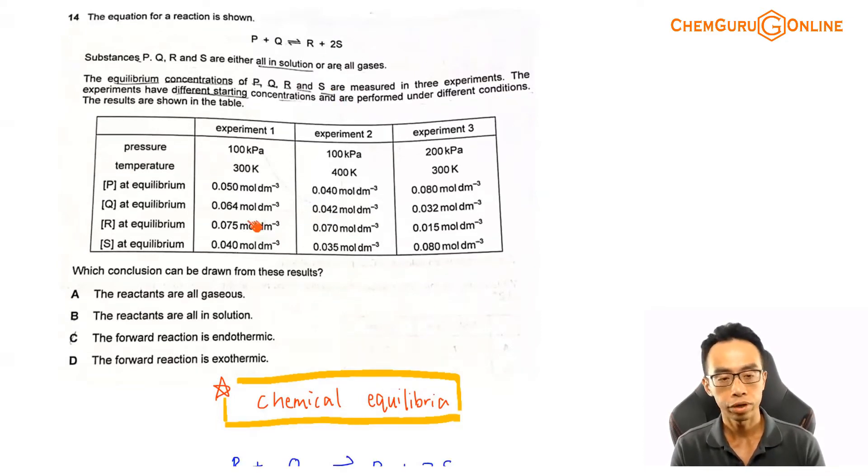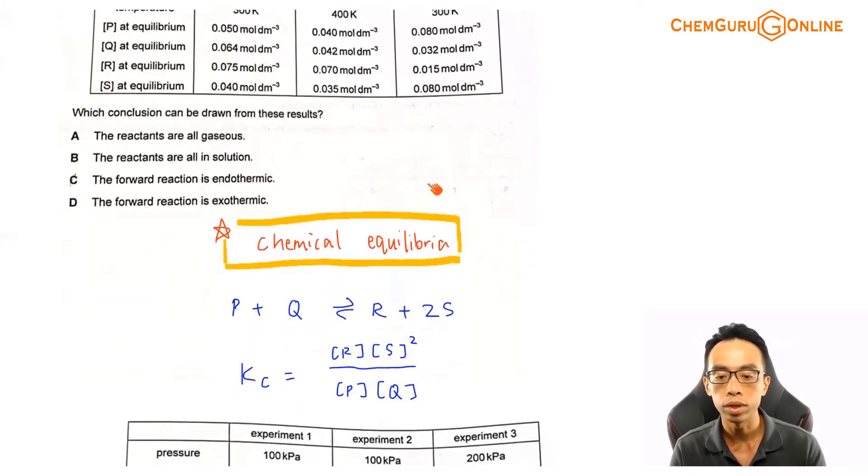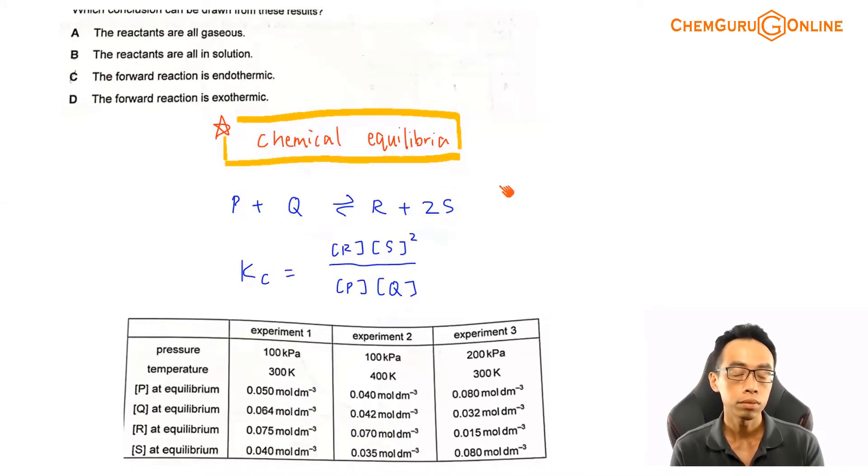We know that this is a reversible reaction, we have the concentration of all these species at equilibrium. If I consider experiments 1, 2, and 3, there is a change in the temperature. Let us see how we handle this particular exercise. We have the equation: P plus Q to give me R plus 2S. We can easily write out the KC expression, the equilibrium constant in terms of concentration.